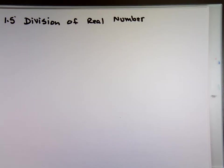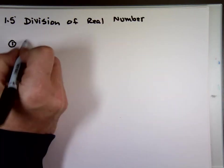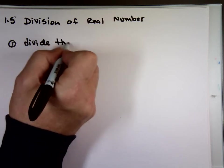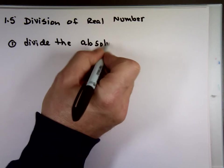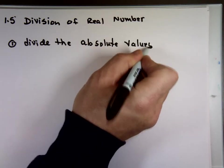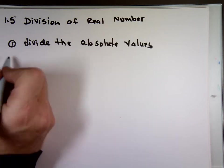The same set of rules for multiplication applies here too. So step number one, divide the absolute values and step number two...